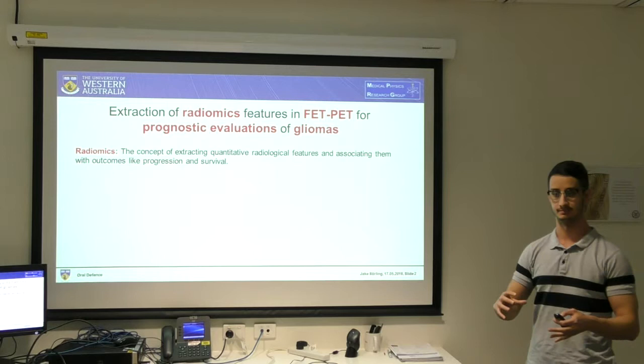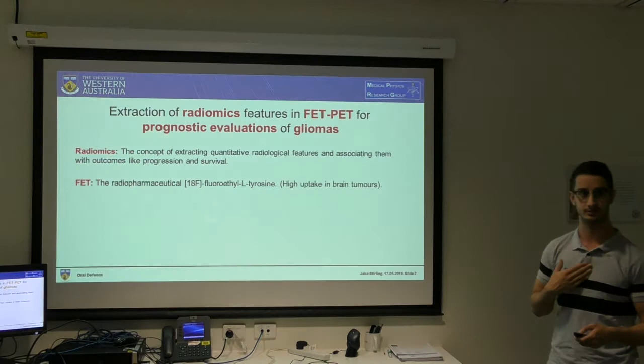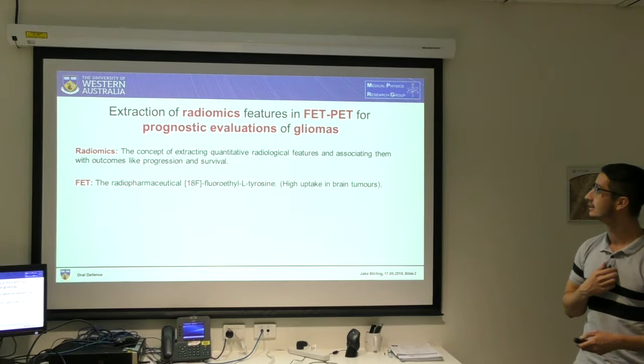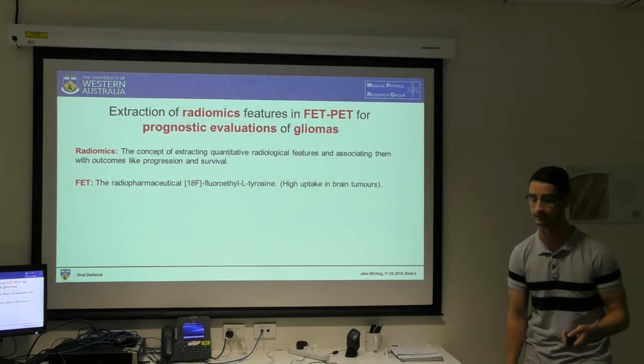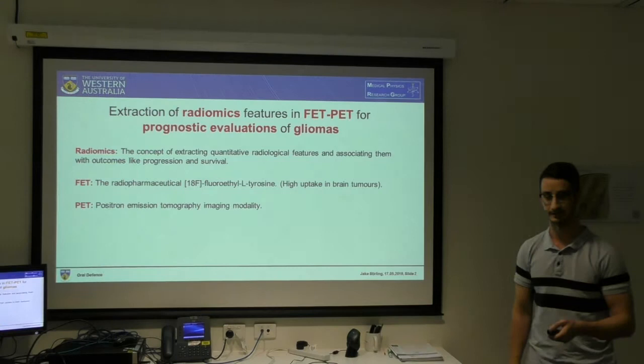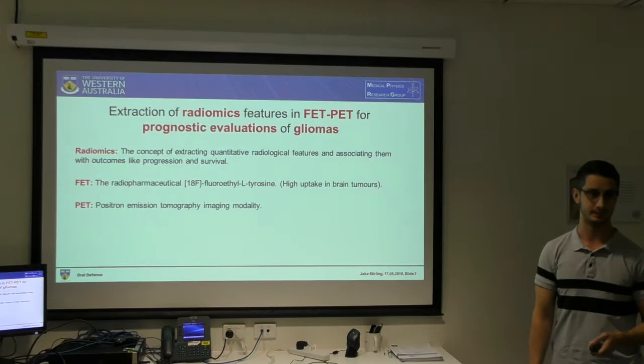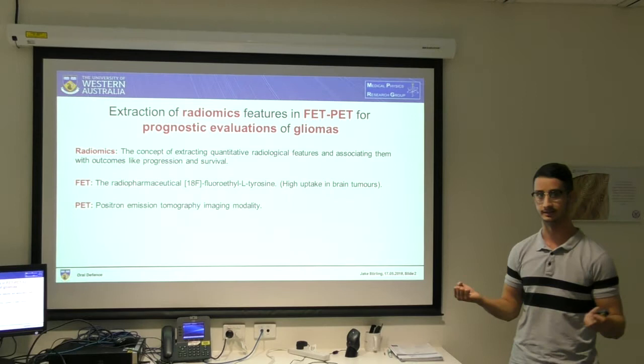FET-PET — this is a radiopharmaceutical tagged with fluorine-18, which is a positron emitter. It has high uptake in brain tumours, which is what we need because that's the focus of this project. FET-PET is a functional imaging modality — positron emission tomography — so it relies on the positron-electron annihilation and gamma ray detection.